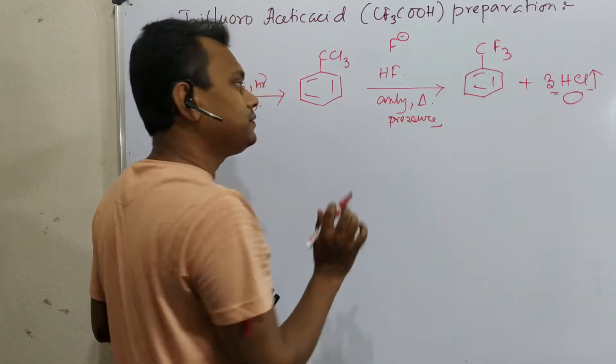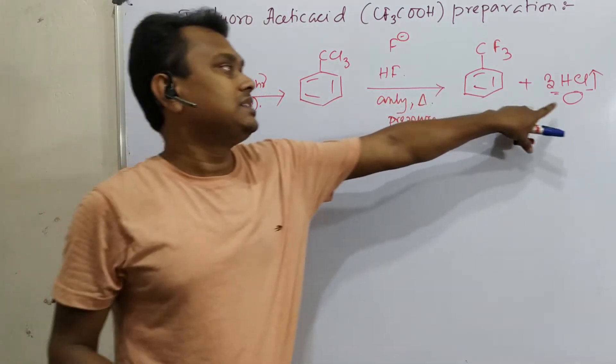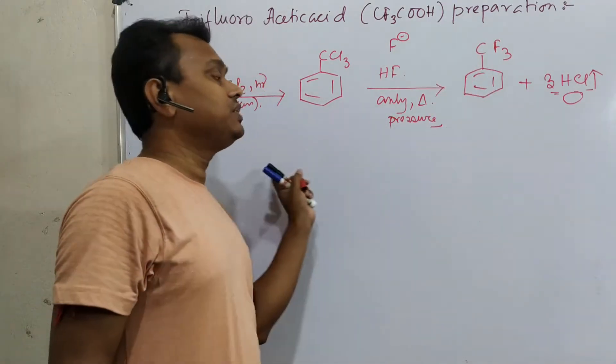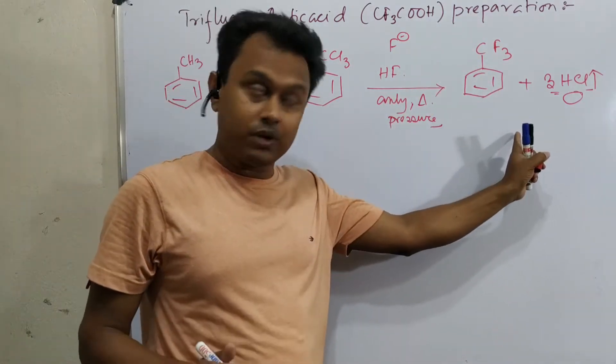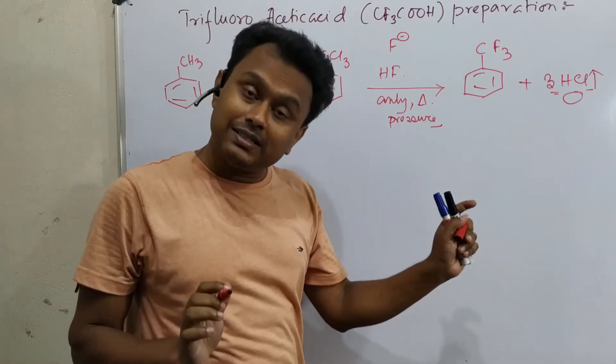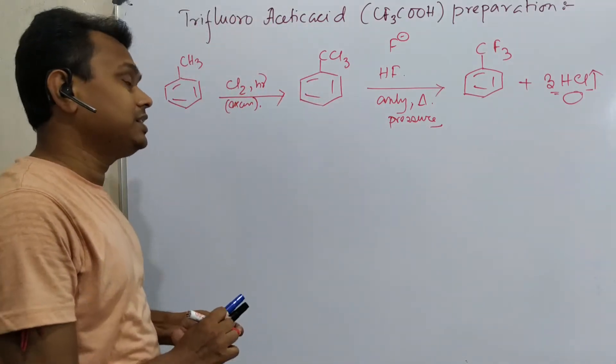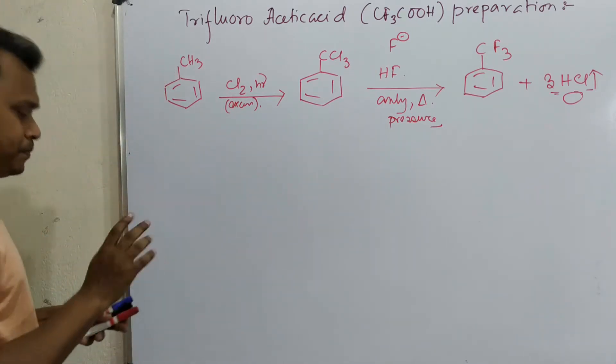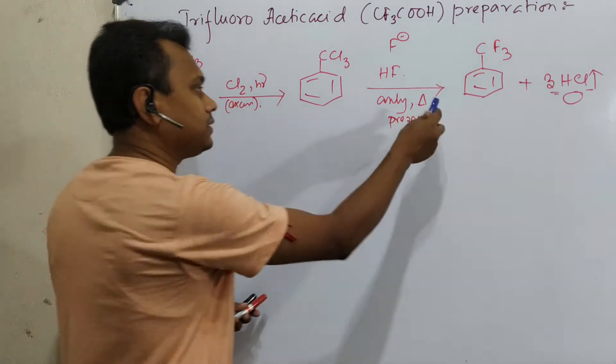You need to understand the nucleophilicity of F- in anhydrous condition. It is the highest compared to other halogens. So it attacks and chlorine leaves three times producing 3HCl. The boiling point of HF is maximum compared to other halogen acids like HCl.